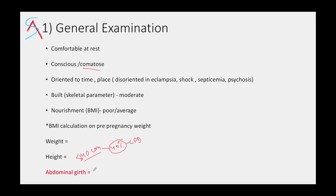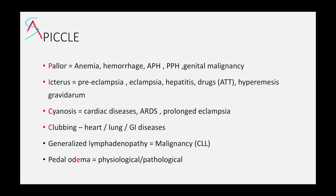Always make sure you measure the abdominal girth. If the girth is more than 100 cm, it could be considered abnormal — maybe because of polyhydramnios or obesity. For pallor, remember to check over the facial skin, the palpebral conjunctiva, nail bed, or oral and vaginal mucosa. Pallor could be because of anemia, hemorrhage, antepartum hemorrhage, or postpartum hemorrhage.